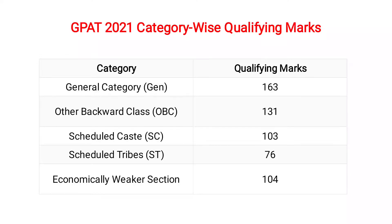GPAT 2021 Category-wise Qualifying Marks: General Category — 163 marks. Other Backward Class (OBC) — 131 marks. Scheduled Caste (SC) — 103 marks. Scheduled Tribes (ST) — 76 marks. Economically Weaker Section (EWS) — 104 marks.